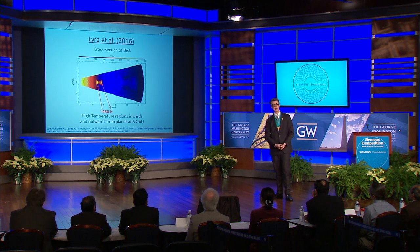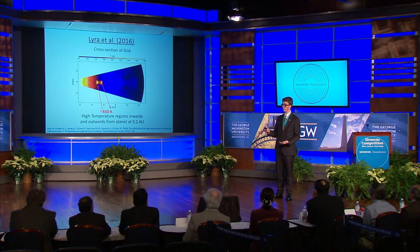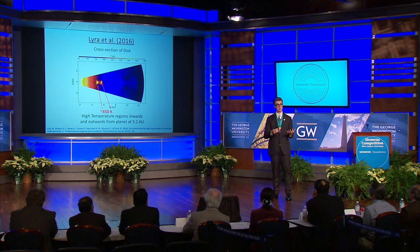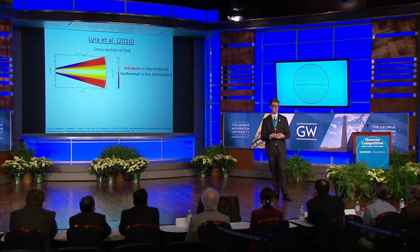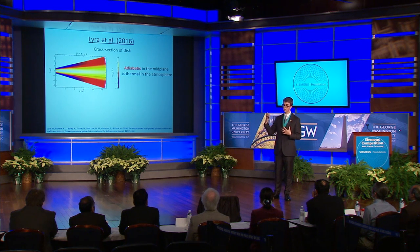However, there's one problem. In the observation of HD 100546, that emission came from the atmosphere of the disc — the surface area outside of the mid-plane — because it's a very optically thick and dense disc. Here, those high-temperature regions are in the mid-plane, in the center of the disc. This has to do with how Lyra et al. 2016 set up their simulation: with a nearly adiabatic mid-plane and a nearly isothermal atmosphere, meaning the heat was trapped in the mid-plane and couldn't cool effectively into the atmosphere.